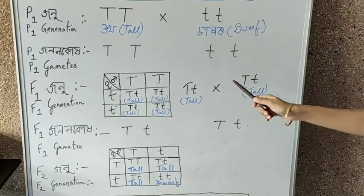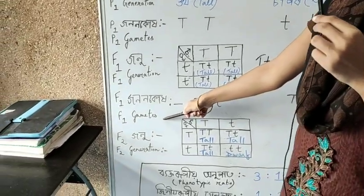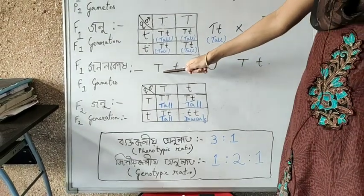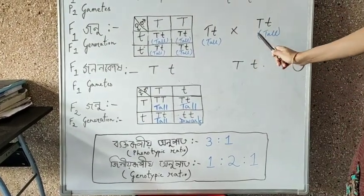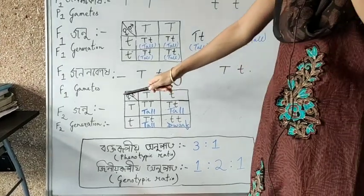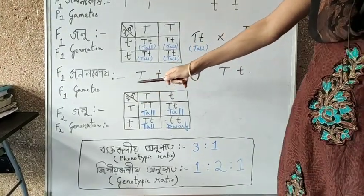For the F1 generation, you will see F1 gametes. The gametes will be T and t. Next, you will see F2 generation.